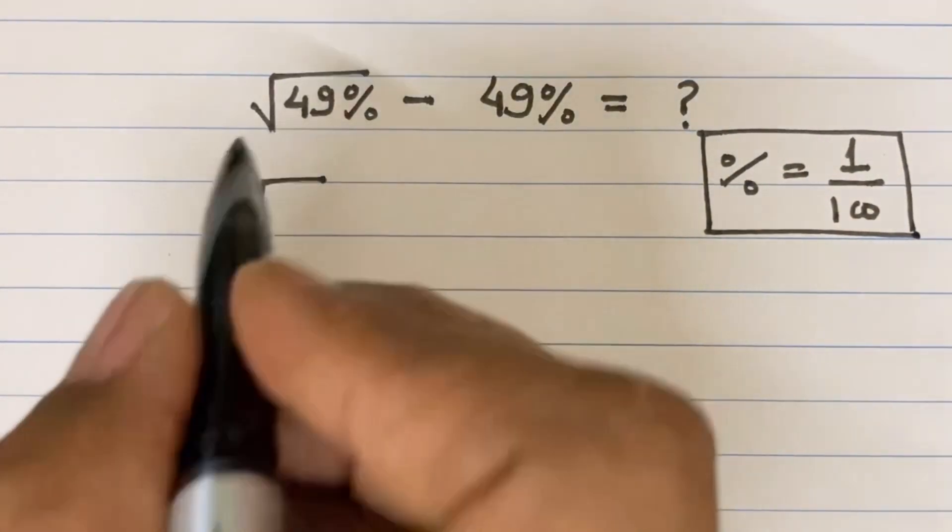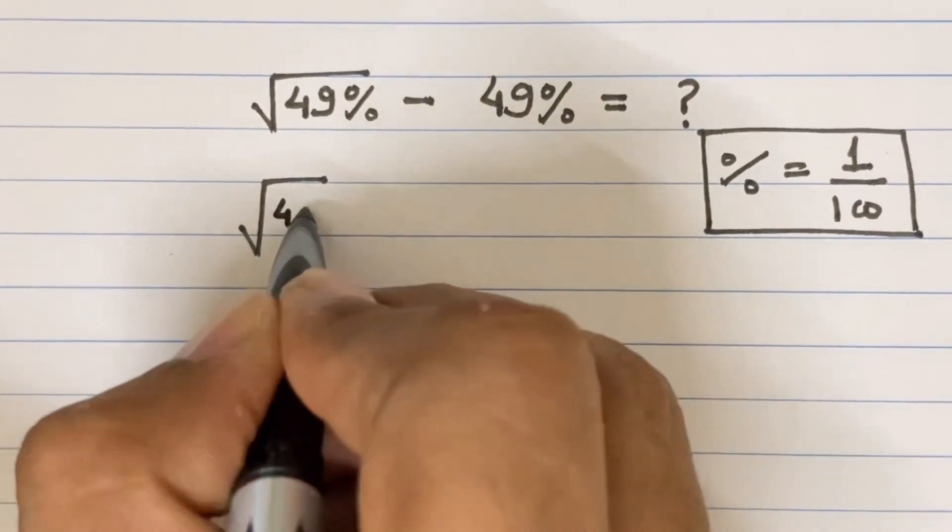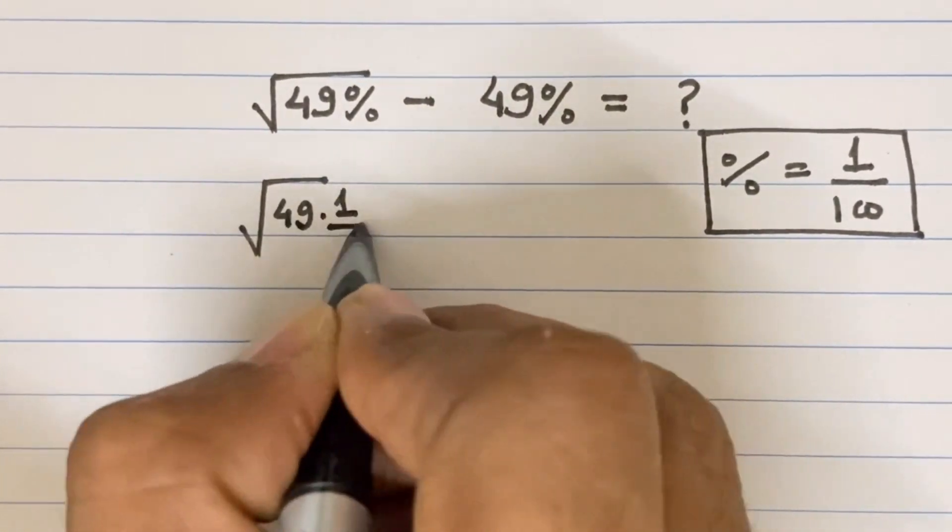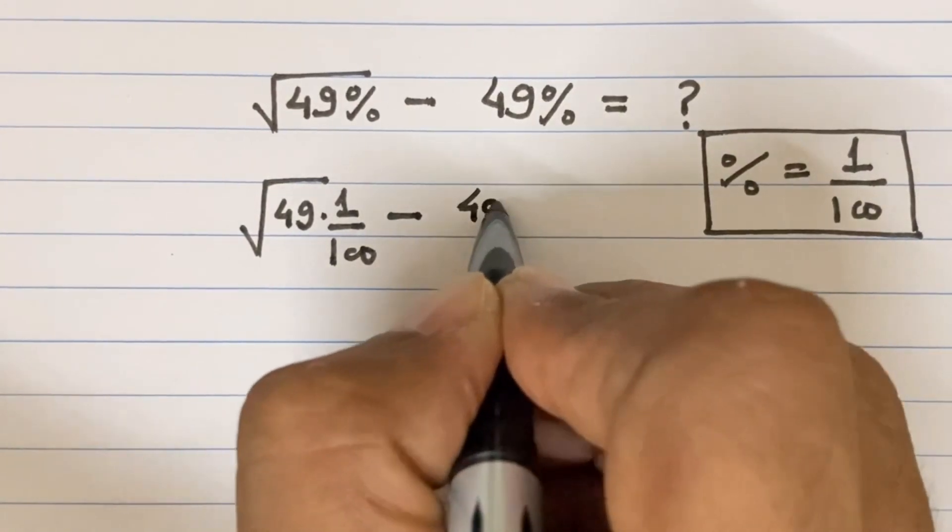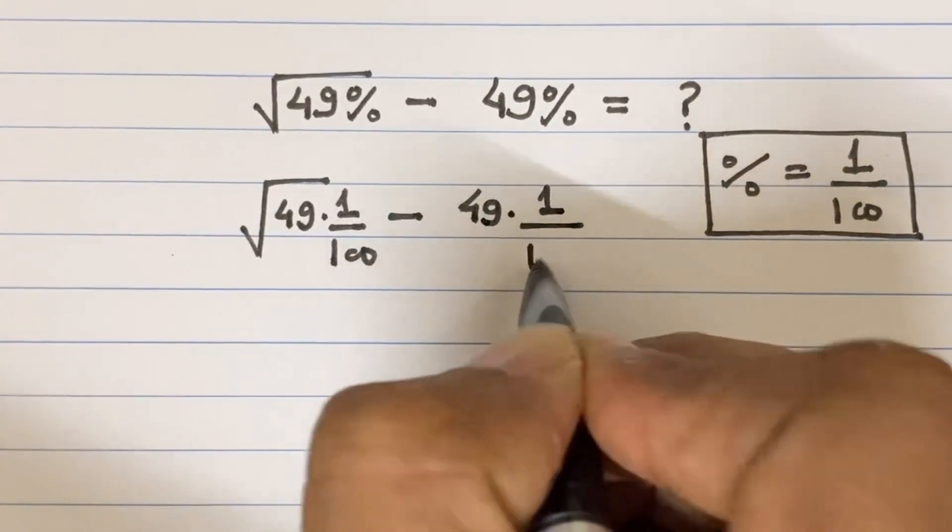So this can be written as 49 multiply 1 divided by 100 minus 49 multiply 1 divided by 100.